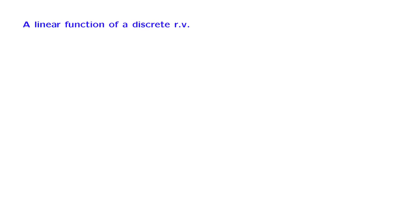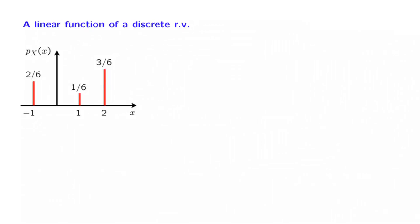Let us now look into the special case where we have a linear function of a discrete random variable. Suppose that x is described by the PMF shown in this diagram, and let us consider the random variable z, which is defined as 2 times x. We would like to plot the PMF of z.